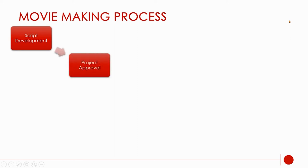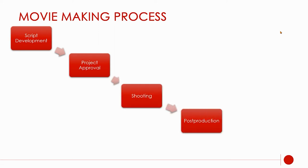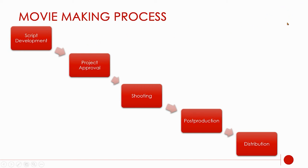The process of making movies: first they develop a script — scripts come first. Then they approve the project and hire the director and actors. Then they shoot the movie, go through post-production, and then distribution — whether it's going to be in a theater, streaming, or whatever. That is the process they go through.